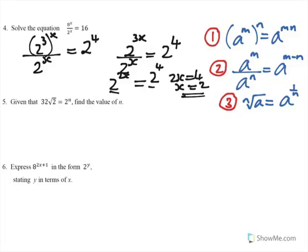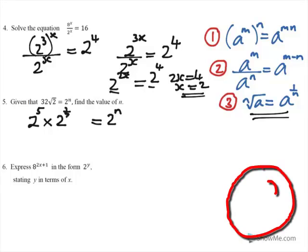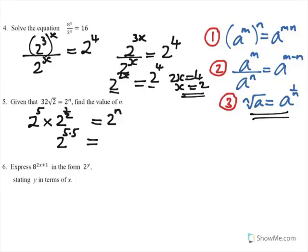Next one, number 5, is a 32 and a square root of 2. Well, the right hand side is giving us a clue as to what base we should use, and it's in fact base 2. So 32 is 2 to what power? Well, the answer is 5, and the square root of 2, using rule number 3, it's the second root, so n equals 2. So it's 2 to the power of 1 over n, meaning 1 over 2 rather, not 1 over 1 half. Now, using the fact that you can add the powers when the base is the same, we get 2 to the power of 5.5, or 5 and a half, equals 2 to the power of n. So n equals 5.5, and that would be the answer.